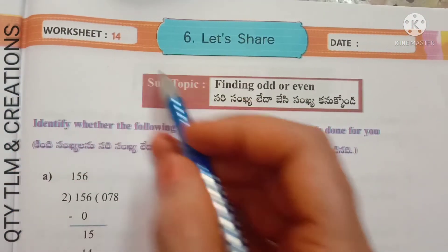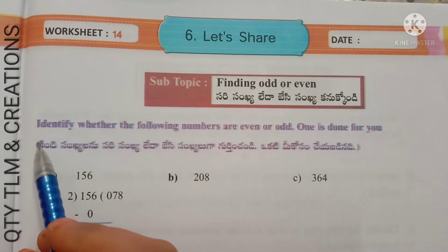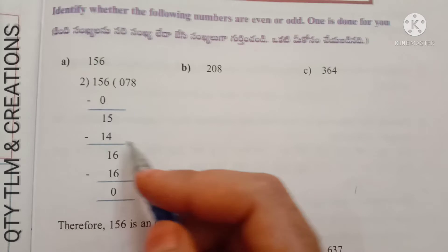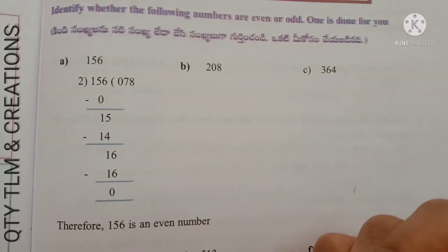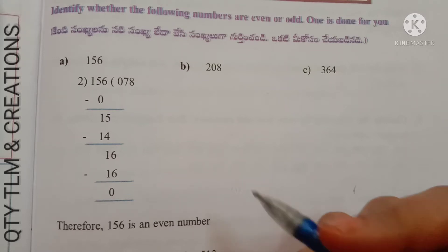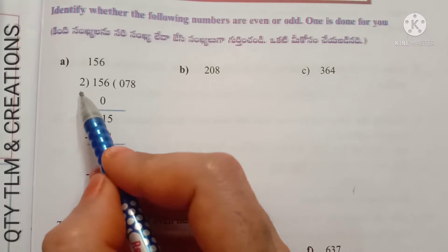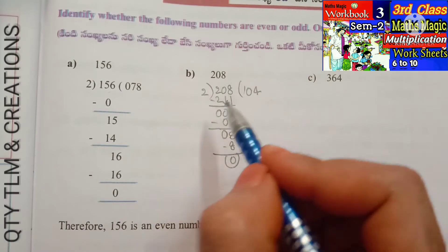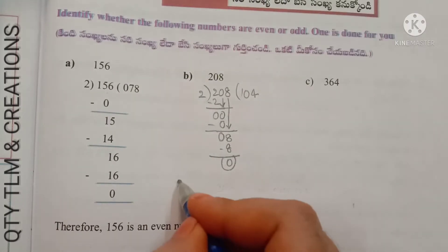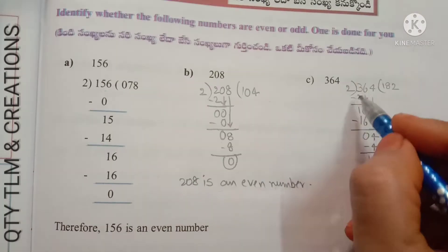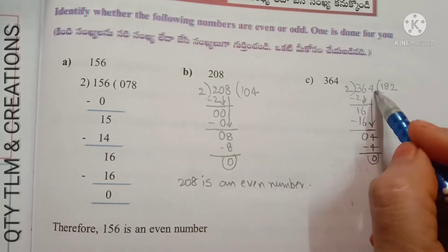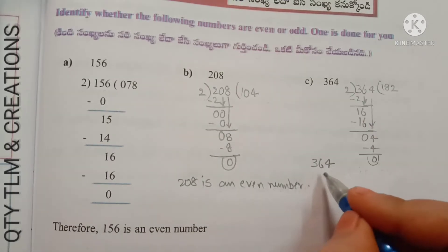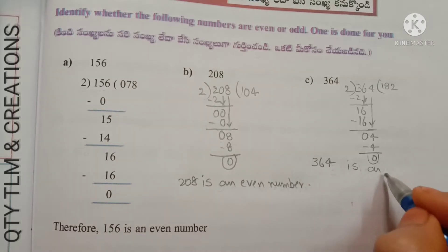Next, worksheet number 14, subtopic: finding odd or even. First question: identify whether the following numbers are even or odd. Remember — any number that can be divided exactly by 2 is called an even number. So 156 divided by 2 gives remainder 0, therefore 156 is an even number. 208 is exactly divided by 2, so 208 is an even number. 364 divided by 2 gives remainder 0, so 364 is an even number.